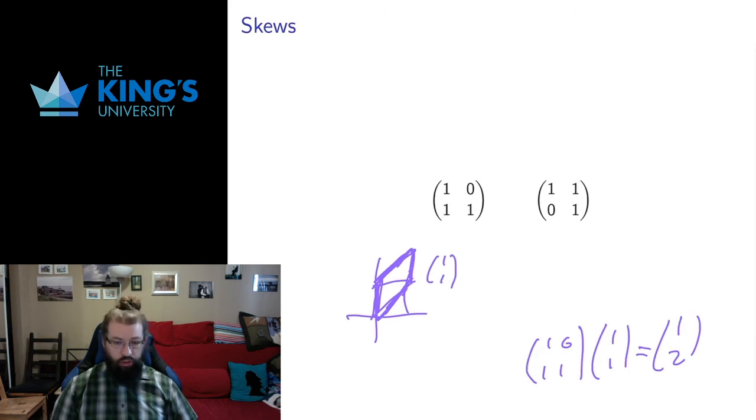It's called a skew because it sort of pulls things up in some direction. This one's pulling it up in the y direction. And if there's a square down here, it will be pulled in the opposite direction, skewed down to this parallelogram. So it pulls up in one direction and down in the other direction.